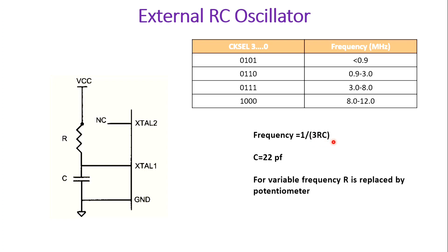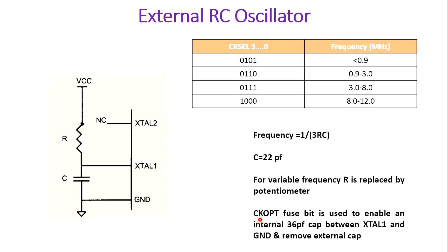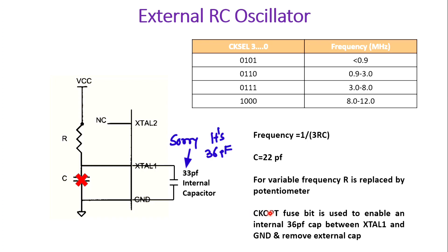Based on the formula f = 1 / (3RC), if you configure the CKOPT fuse bit — which we have already covered in the last video — and enable it by setting it to 0, there is an internal capacitor inside the ATmega32 microcontroller. The value of that capacitor is 36 pF. If we configure this bit as 0, that internal capacitor comes into picture and there is no need to connect an external capacitor, saving hardware cost. This RC oscillator will then provide the clock frequency to the microcontroller.